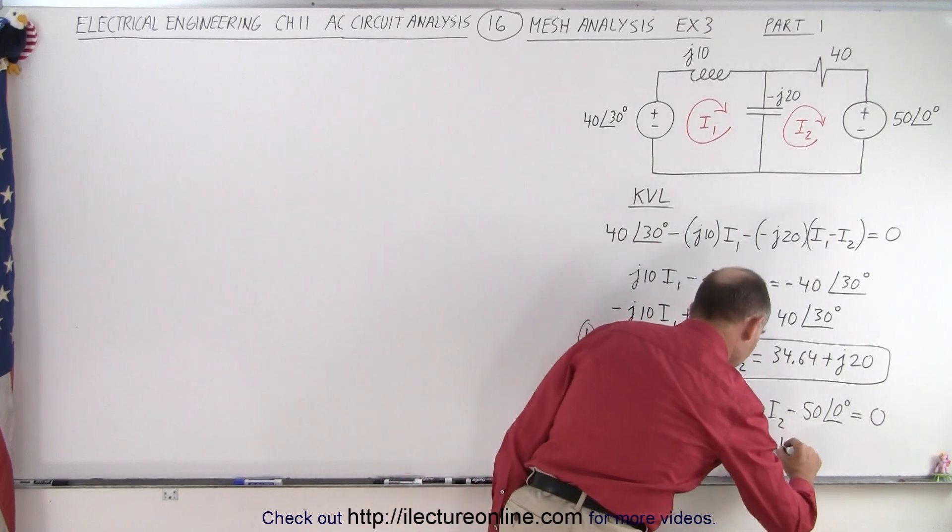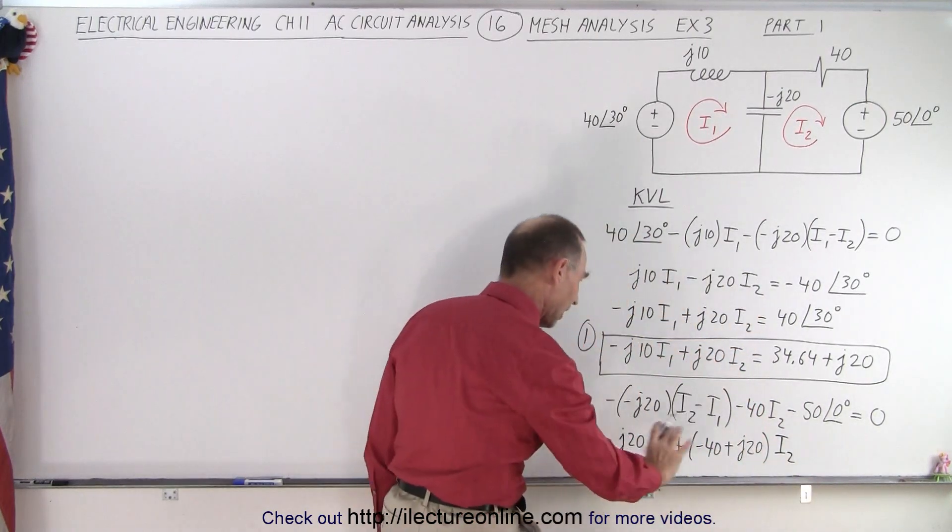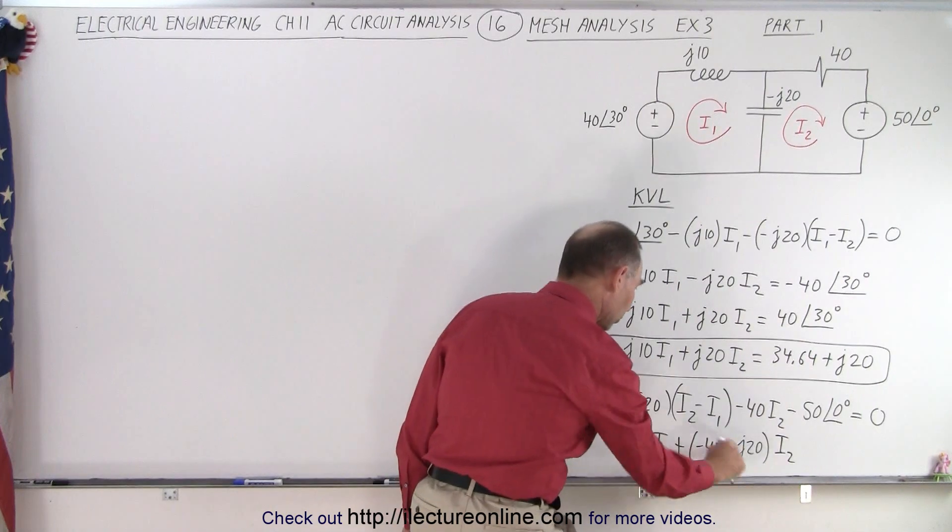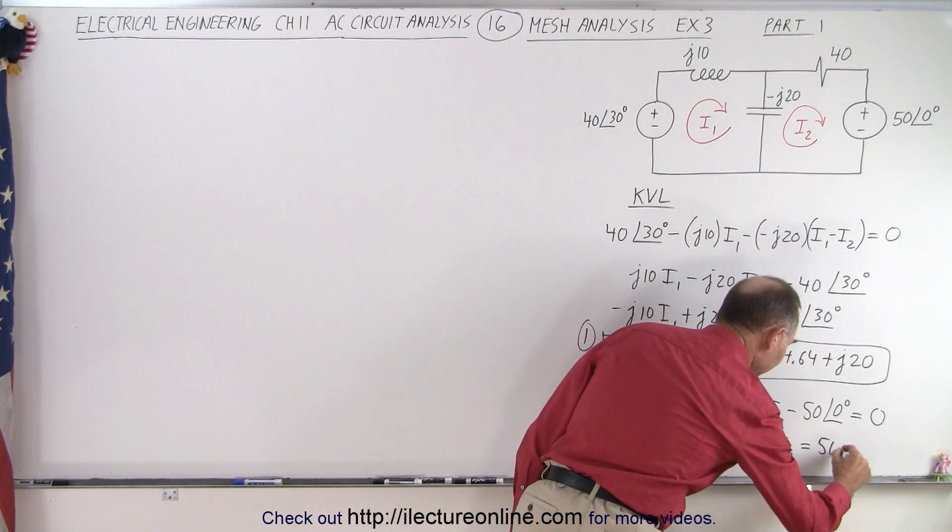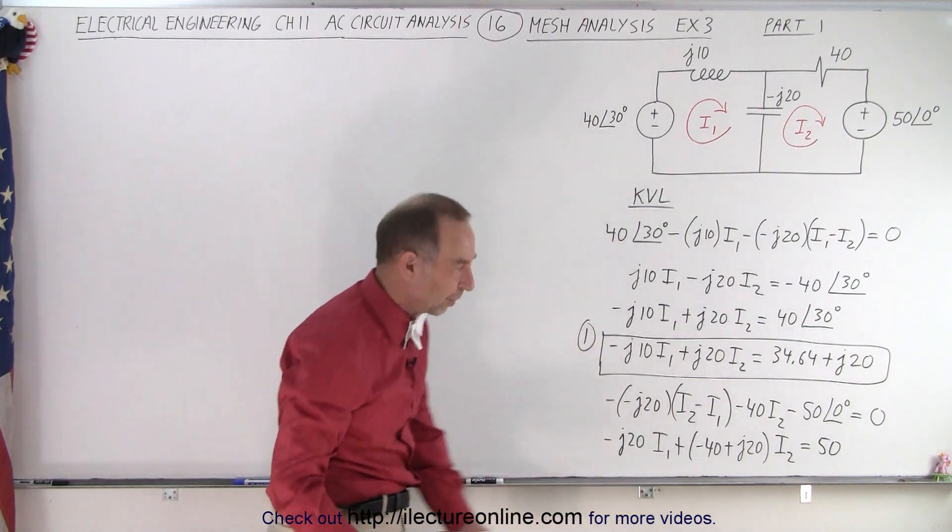Times I2. Always make sure about the sign. So a minus 40 plus J20. And the minus 50 goes across. That becomes equals to a positive 50 with a phase angle of 0. So just the real part only.